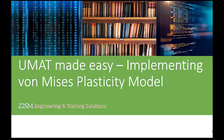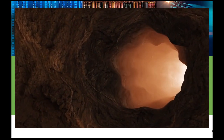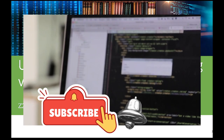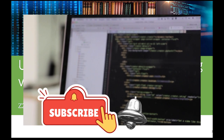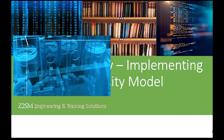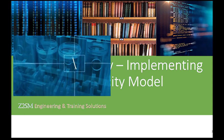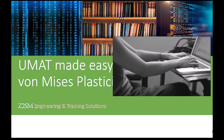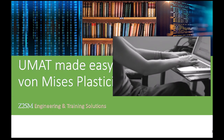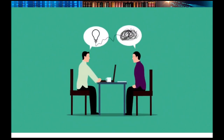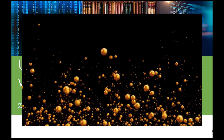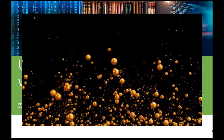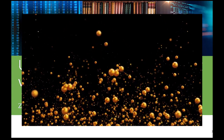Welcome to UMAT Made Easy: Implementing the Von Mises plasticity model. In this comprehensive course we demystify the complexities of the user material subroutine UMAT and take you on a journey to master the implementation of the Von Mises plasticity model. Whether you are a seasoned engineer looking to expand your expertise or a student eager to delve into the world of computational mechanics, this course is designed to make UMAT accessible and Von Mises plasticity understandable.